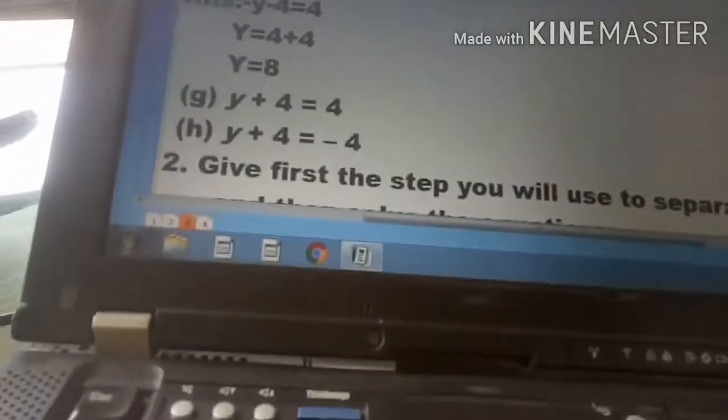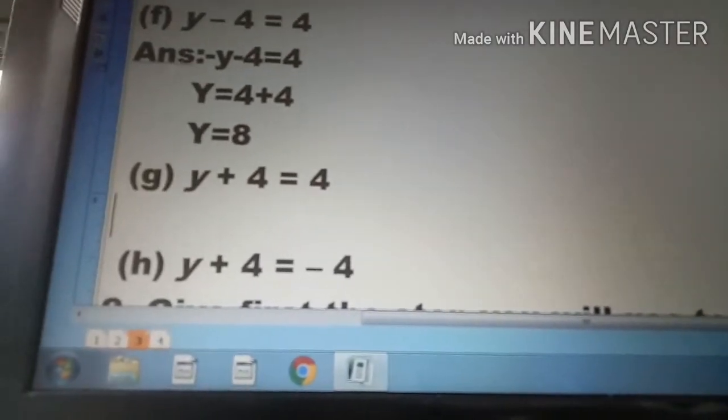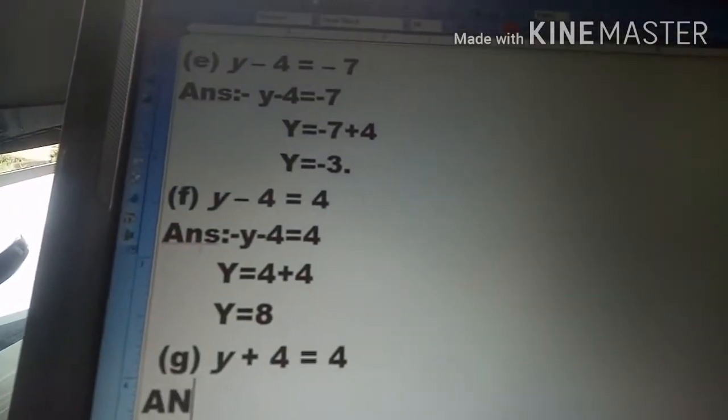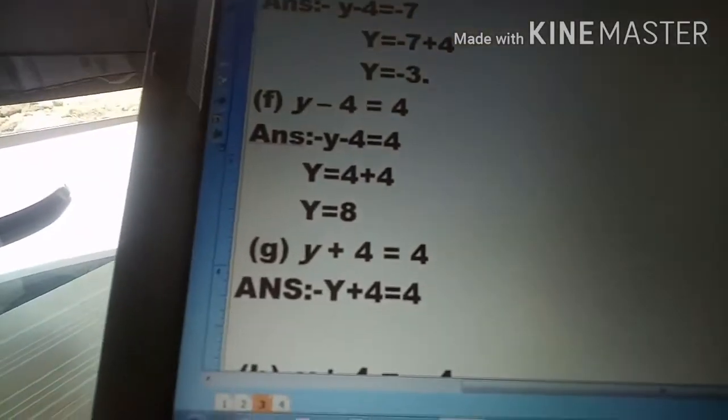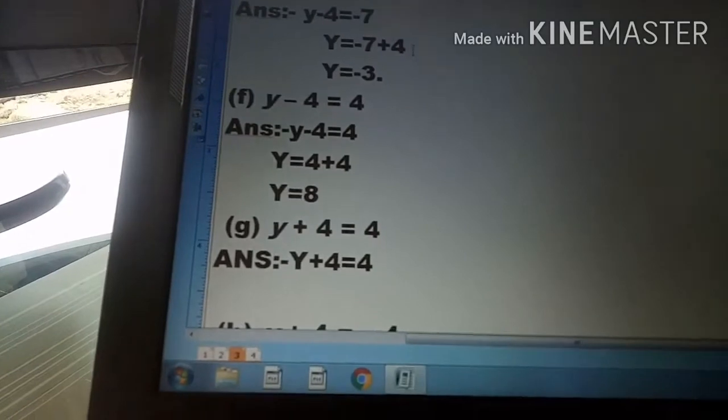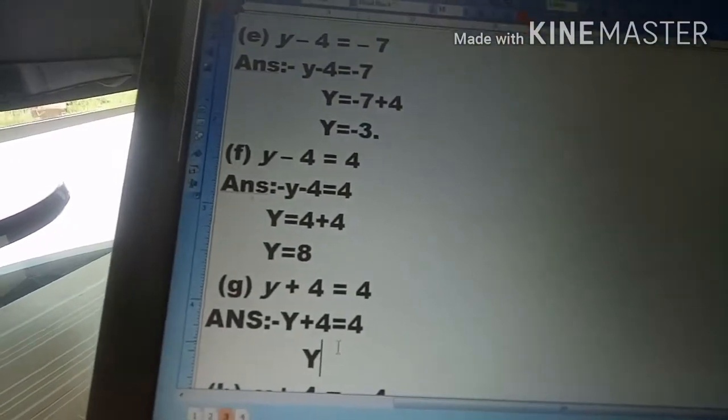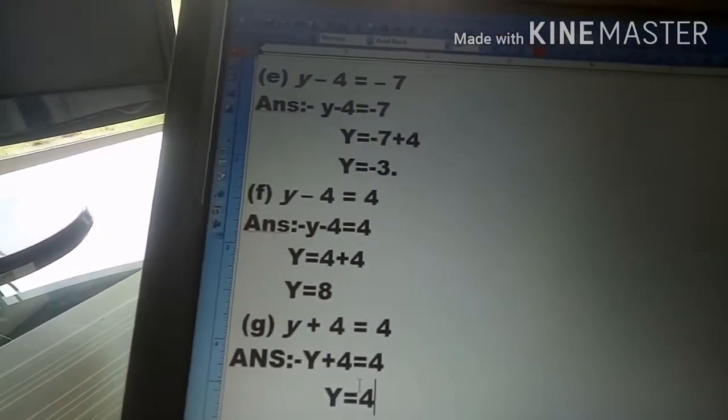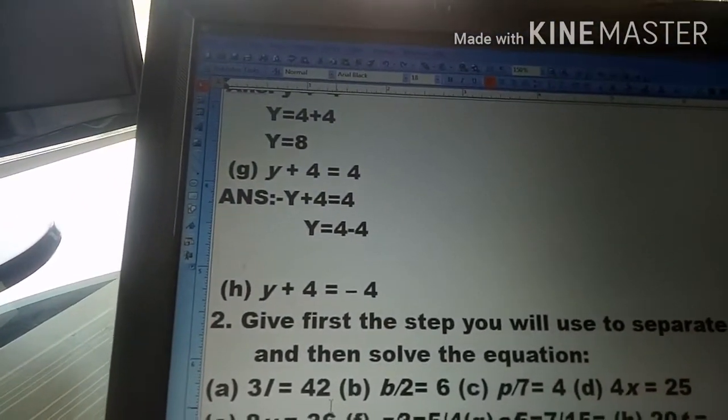Question (g): y plus 4 is equal to 4. When plus 4 moves to the right side, it becomes minus 4. So y is equal to 4 minus 4, which equals 0.